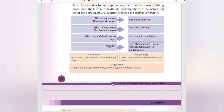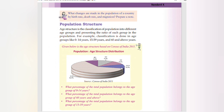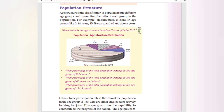Birth rate is the number of live births per thousand people. Death rate is the number of deaths per thousand people. Migration is the settlement of people from one region in another region. Population structure — age structure is the classification of population into different age groups: 0 to 14 years, 15 to 59 years, and 60 years and above.